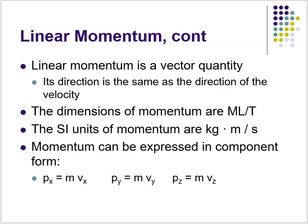Linear momentum is a vector quantity: p is equal to m times v. The SI units of mass are kilograms, and the SI units of velocity are meters per second, so the SI units of momentum are kilogram·meters per second. You can also express it in component form — since it's a vector, it has coordinates in x, y, and z.